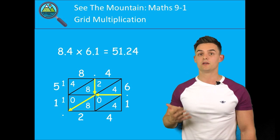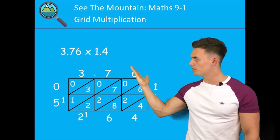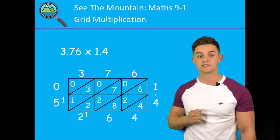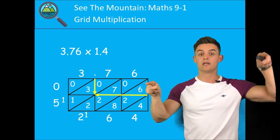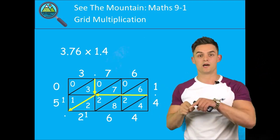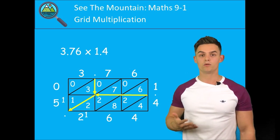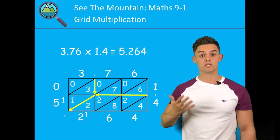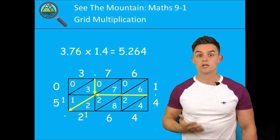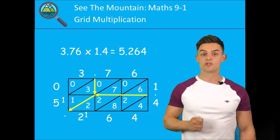In this example here, where would the decimal place lie? Once again we follow them vertically and horizontally until they meet, then down the diagonal. 3.76 multiplied by 1.4 will actually equal 5.264. As always in See The Mountain Maths, you're left with an exam question. Solution can be found in the description.